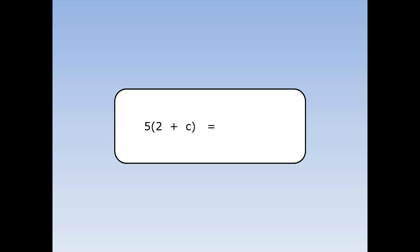We're going to multiply out 5 bracket 2 plus c. The 5 at the front multiplies both things inside. 5 times 2 is 10. 5 times c is 5c. When we multiply out 5 bracket 2 plus c, the answer is 10 plus 5c.